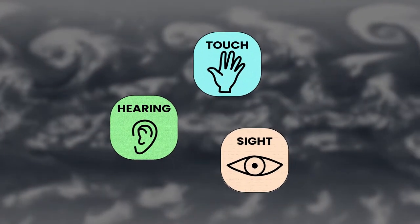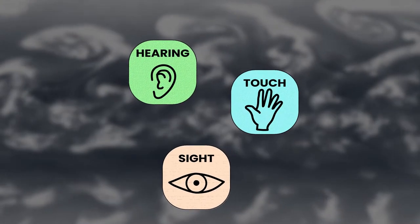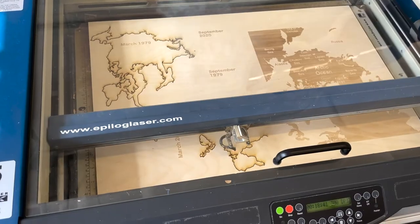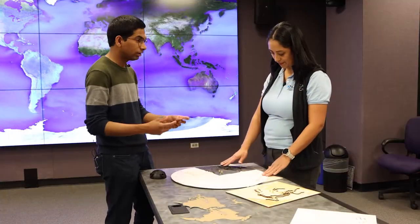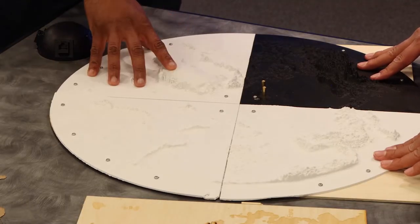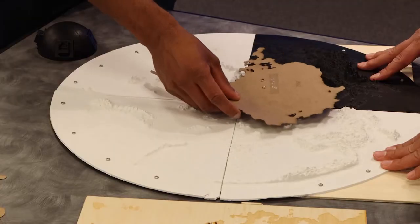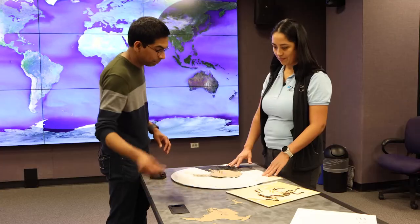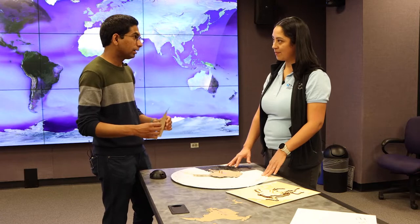So with inclusive design principles, we use a multitude of solutions that work for the broadest possible audience. This is an example of one such data representation where we use touch as an alternate modality to examine data. What you see here is a 3D printed representation of the Northern Hemisphere on which you can place cutouts which represent the sea ice exchange. By overlaying the pieces, people are able to see the impact of climate change on Arctic sea ice using haptic touch.